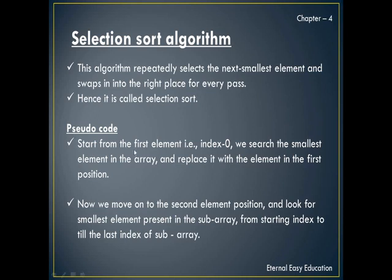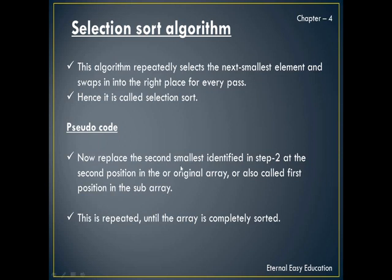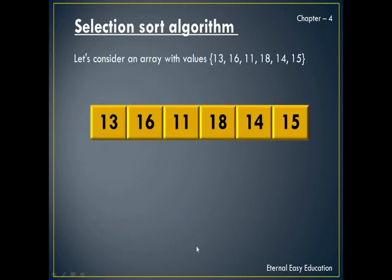The steps for this algorithm are: start from the first element at index zero and search for the smallest element in the array, then replace it with the element in the first position. Move to the next element position and look for the smallest element in the sub-array from the sorting index to the last index. Replace this second smallest element at the second position in the original array. This is repeated until the array is completely sorted. Don't panic — it's very easy, we'll see with an example.